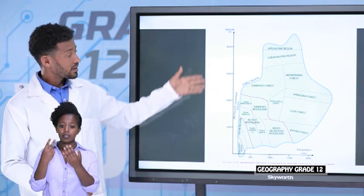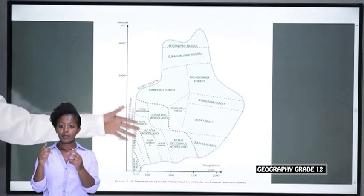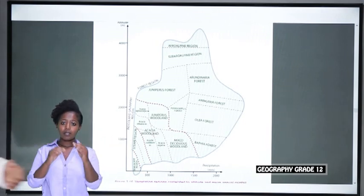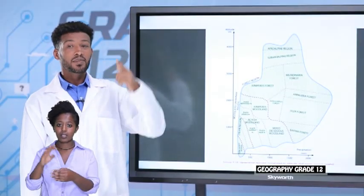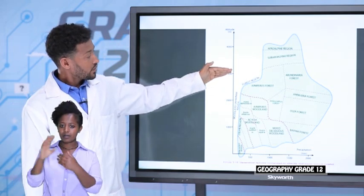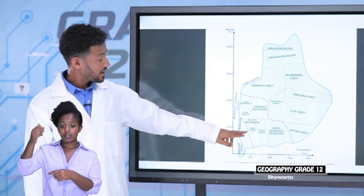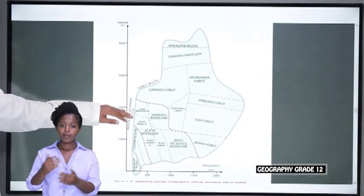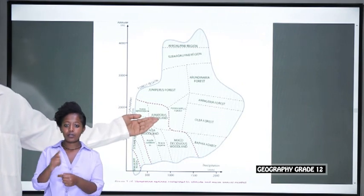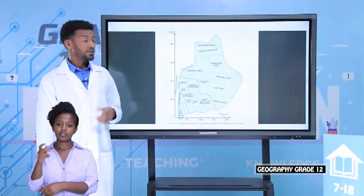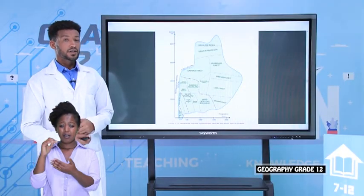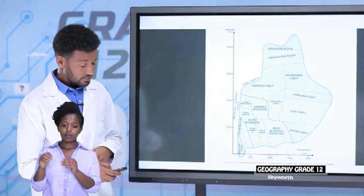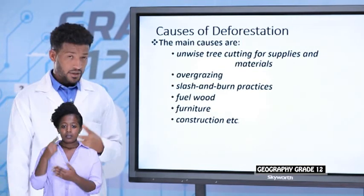Let's look at the variation of natural vegetation based on altitude. The lowest altitude of 1000 meters and the maximum altitude of 4000 meters are taken as the range. At the lower altitudes you can find acacia and mixed cedar forests. Above 2000 meters you can find juniper woodland, olea forest, and aningeria forests. At the maximum altitude you find afro-alpine and sub-afro-alpine vegetation.